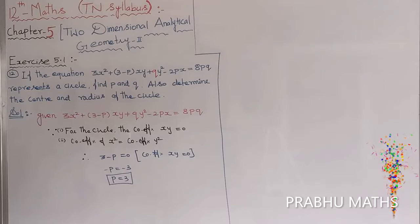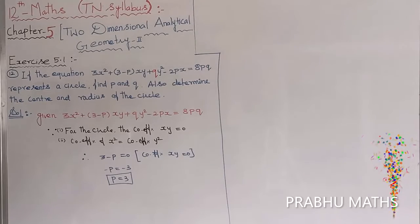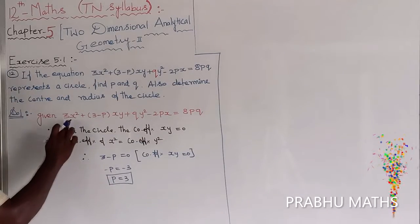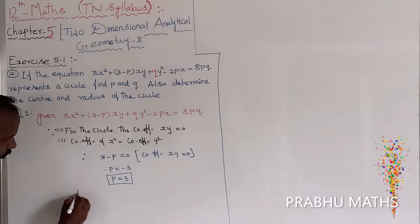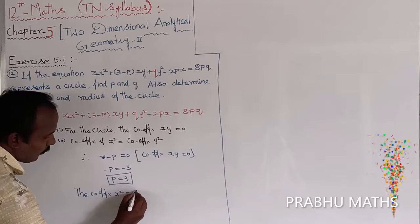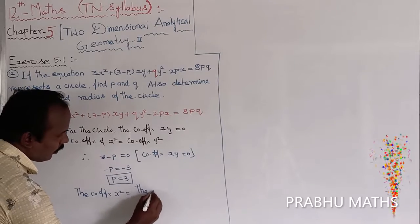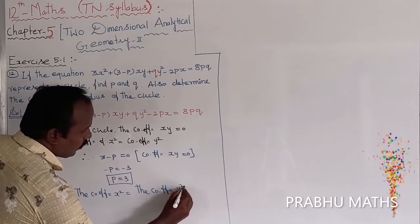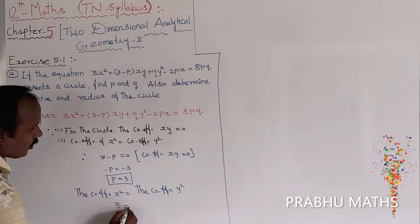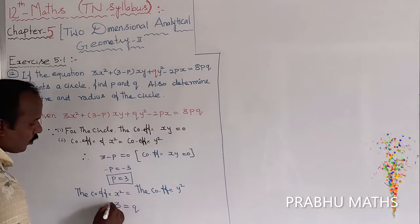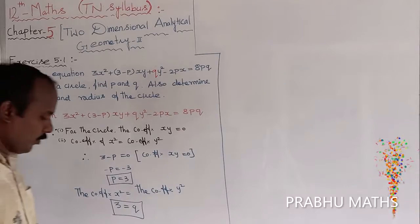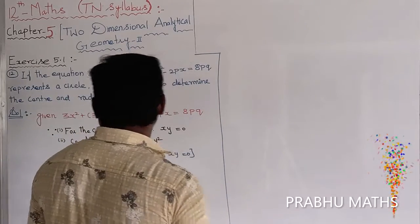Next, we find q using Property 2. The coefficient of x squared is 3, and by setting it equal to the coefficient of y squared, we get q equals 3. So p equals q equals 3. Now we apply these values of p and q to the given equation.